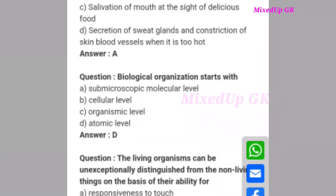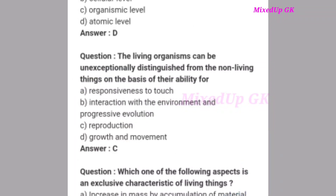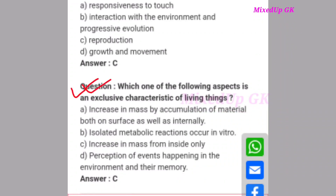Next question: Biological organization starts with what level? The correct answer is option D: atomic level. Next question: Living organisms can be exceptionally distinguished from non-living things on the basis of their ability for what? The correct answer is option C: reproduction. The last question for today: Which one of the following aspects is an exclusive characteristic of living things? The correct answer is option C: increase in mass from inside only.